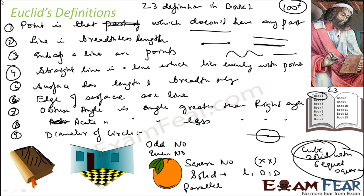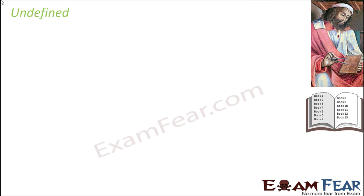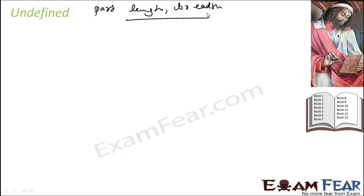If you look at these definitions, they use terms like 'part,' 'length,' 'breadth.' These terms are used for defining other things. For example, a line is something which has length but no breadth — but what is length? What is breadth? You don't know. These terms are used without defining them.